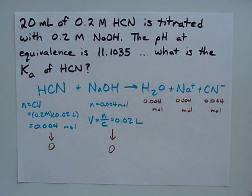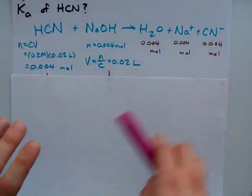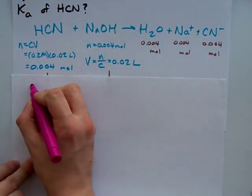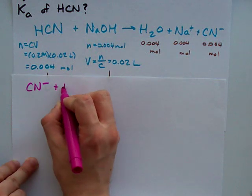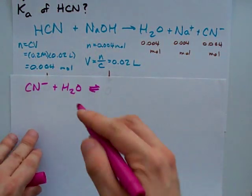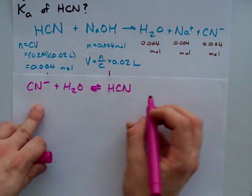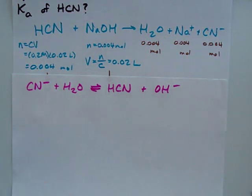So, let's see how that affects the pH. We are starting with CN- in solution. CN- in water does what? Well, it's a base. And so, it steals an H-plus away from water and leaves an OH- behind. That's the definition of what a base does.